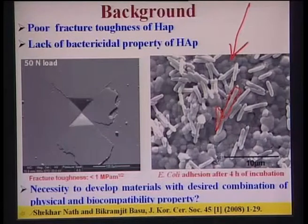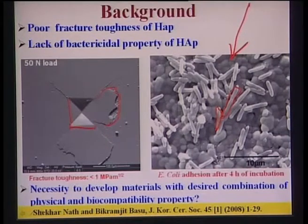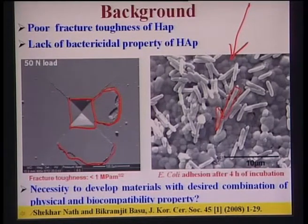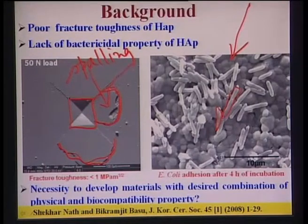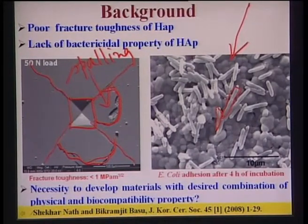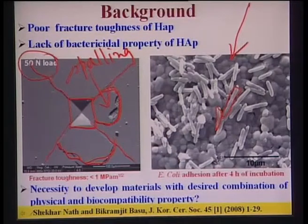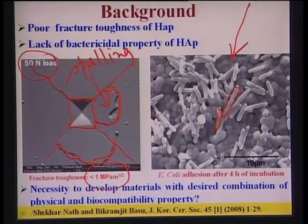Hydroxyapatite is also highly brittle. Looking at a Vickers indent at 5 kg load, there is a lot of spalling — chipping of material — adjacent to the indent, because extensive crack formation leads to spalling. The radial crack lengths from all corners of the Vickers indent are relatively large at 50 N load, indicating very low fracture toughness — less than 1 MPa√m.